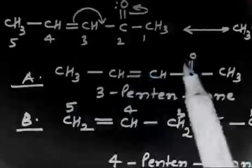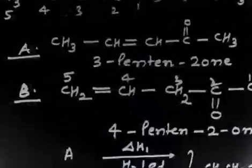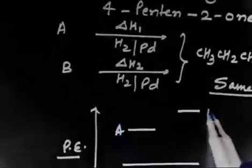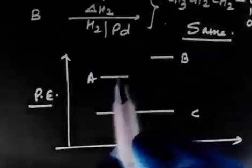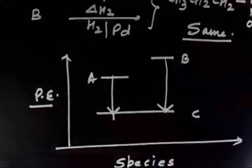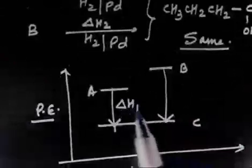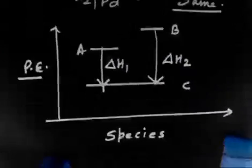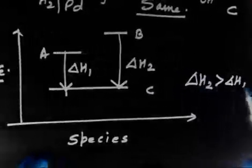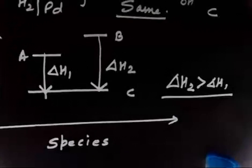In the case of A (3-pentine-2-one), resonating structures are possible due to conjugation of the double bond with the carbonyl, so A is more stable and sits lower in energy. B (4-pentine-2-one) has no such resonance, so B is less stable and sits higher in energy. Therefore ΔH2 is greater than ΔH1 — the heat of hydrogenation of 4-pentine-2-one is greater than that of 3-pentine-2-one.